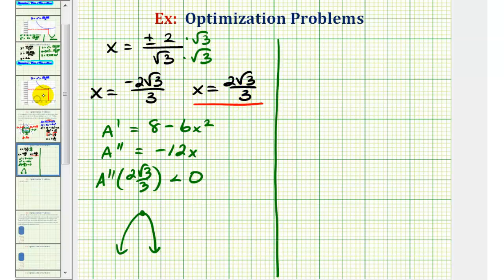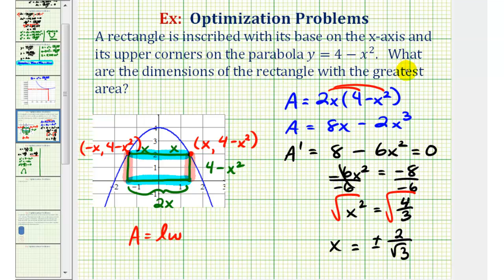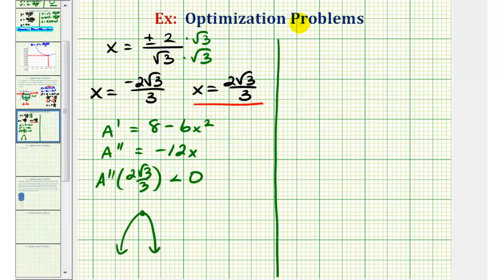So to answer the question, what are the dimensions that will maximize the area? Again, the dimensions are 2x by 4 minus x squared. So 2x would be equal to 2 over 1 times 2 square root 3 over 3, which would be 4 square root 3 over 3.